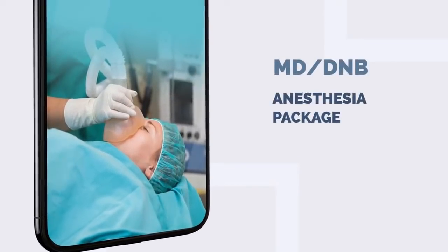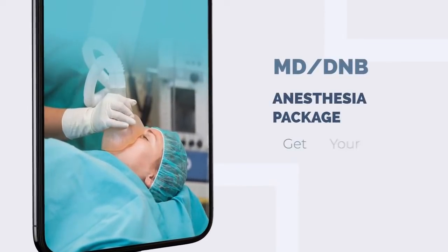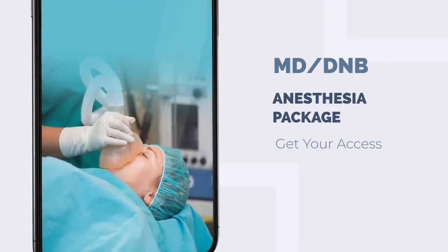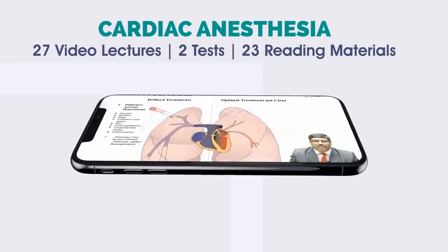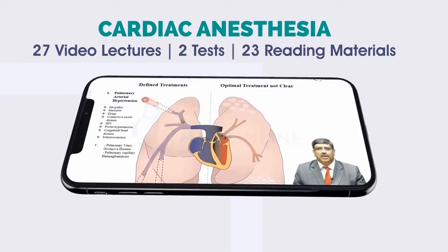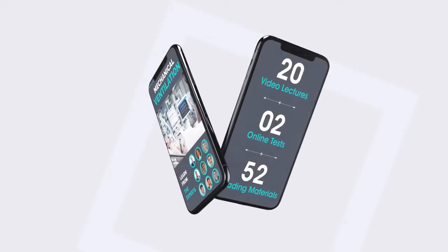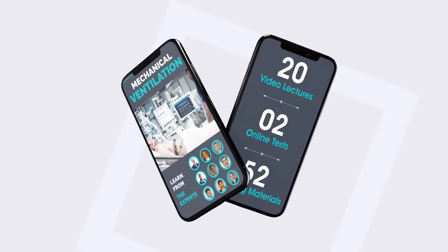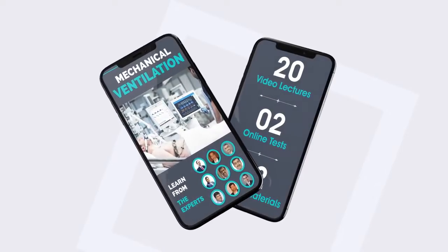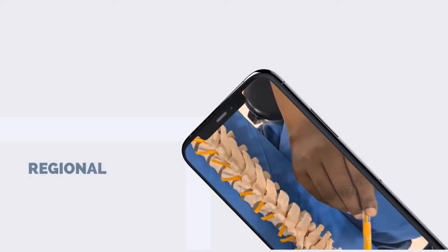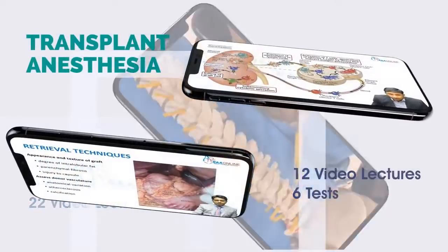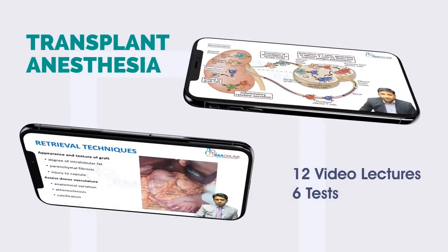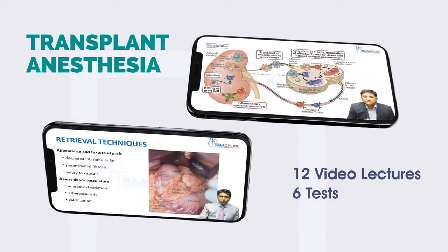MDDNB Anesthesia Package. Cardiac anesthesia includes 27 video lectures, 2 tests, and 23 reading materials. Mechanical ventilation includes 20 video lectures, 2 tests, and 52 reading materials. Regional anesthesia includes 22 video lectures. Transplant anesthesia includes 12 video lectures and 6 tests.